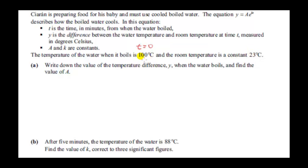In reality, as this water cools, the heat enters the surroundings and the surrounding temperature increases. But because the surrounding room is so much bigger than this quantity of water, the temperature of the surrounding room does not increase significantly. It increases very slightly, but that tiny amount is negligible, so we can say that the surrounding room temperature is constant.